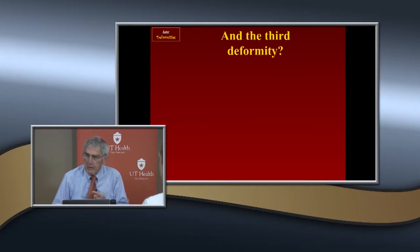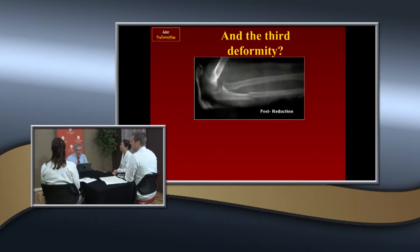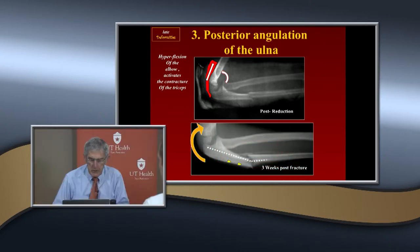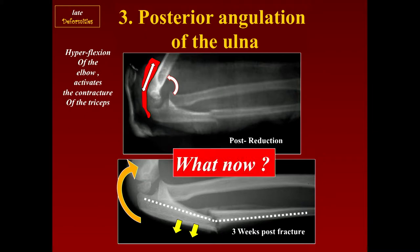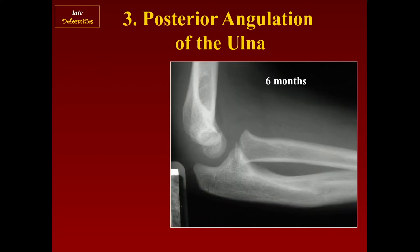The third deformity you have to worry about is the triceps. If you put them in hyperflexion, the hyperflexion of the elbow activates contraction of the triceps, and that results in a posterior bowing. If you leave it alone, a lot of times it will remodel — much of this angulation will remodel. But it gives an unsightly prominence that will persist for a time, and parents don't like that.